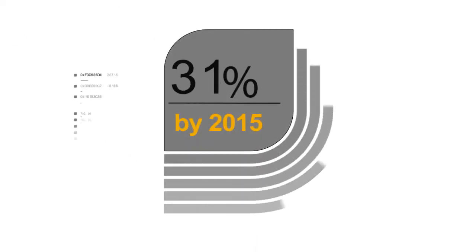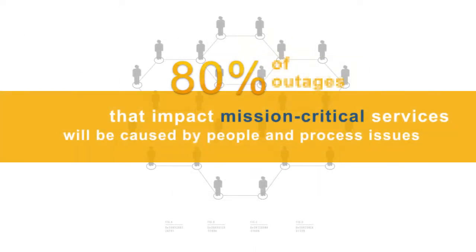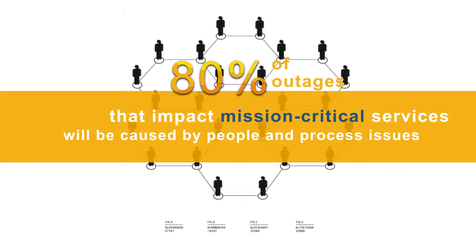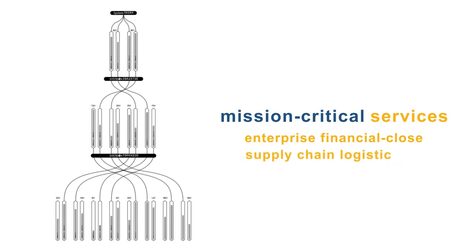It's estimated that through 2015, 80% of outages that impact mission-critical services will be caused by people and process issues, such as enterprise financial close, supply chain logistics, and manufacturing processes.